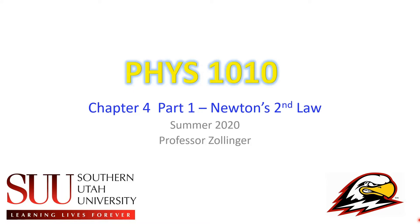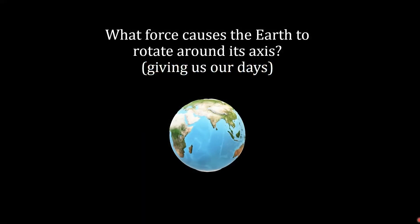Okay guys, for chapter four I'm gonna break the videos into smaller sections rather than having one large video. This is part one, we're gonna discuss Newton's second law. As I often do, we're gonna start off with a question. Here I have the Earth and it's rotating on its axis - this is what gives us our days. The question I want to ask is: what force causes the Earth to rotate around its axis?